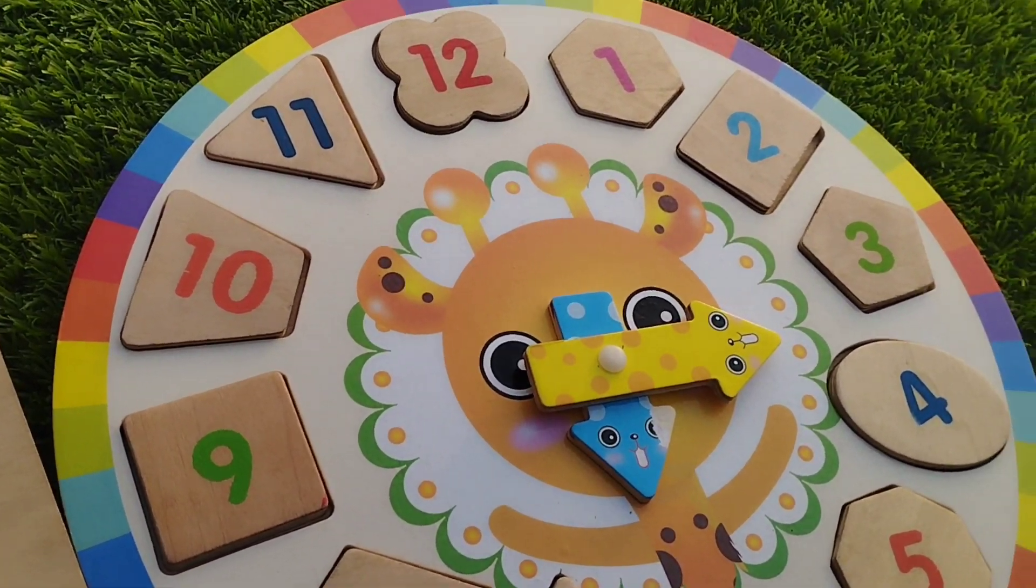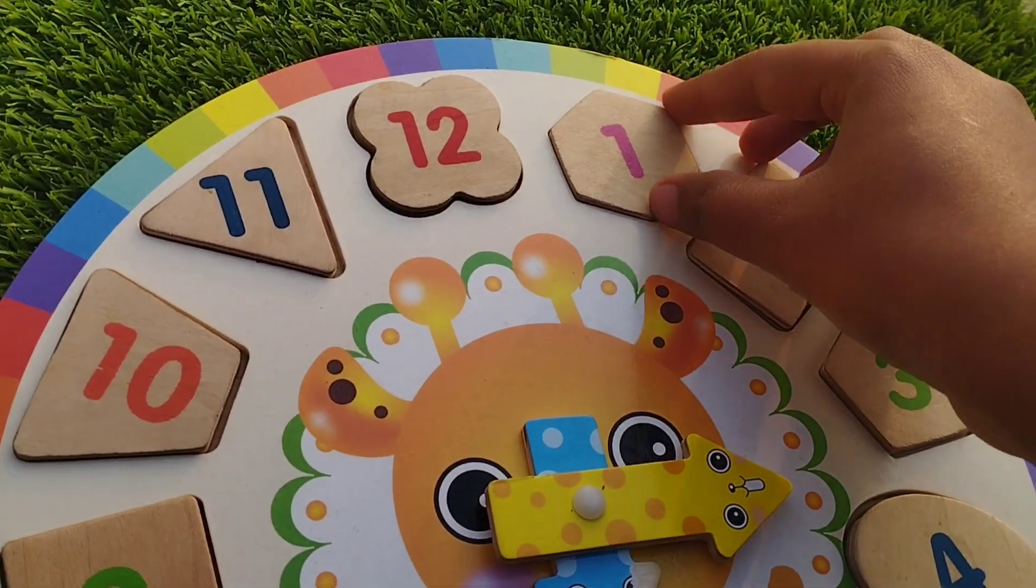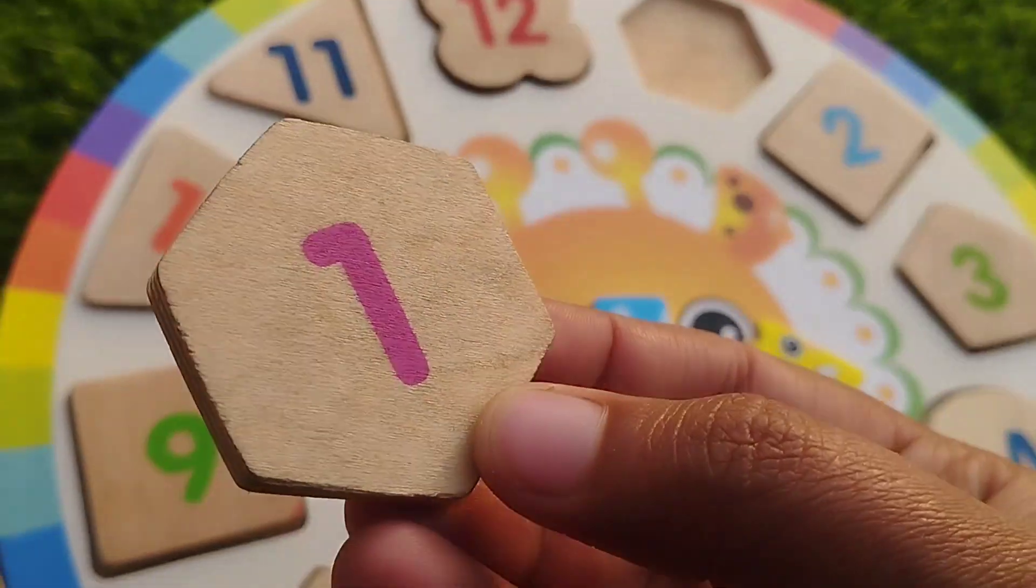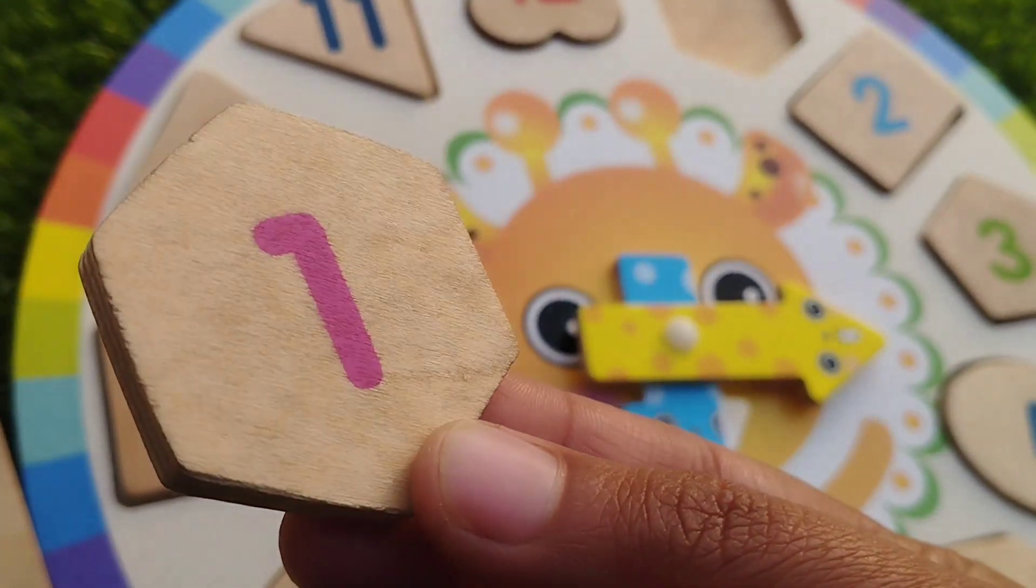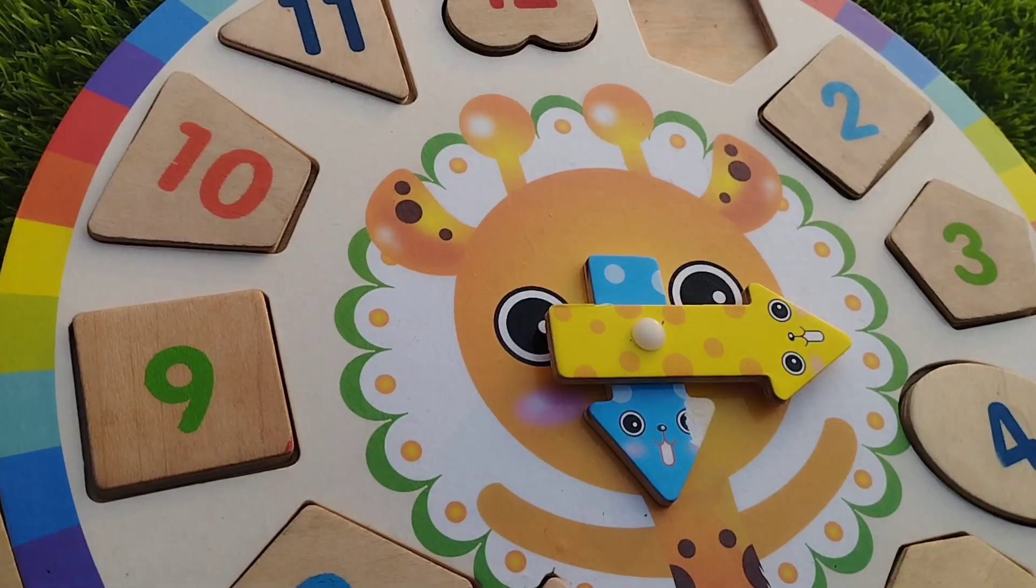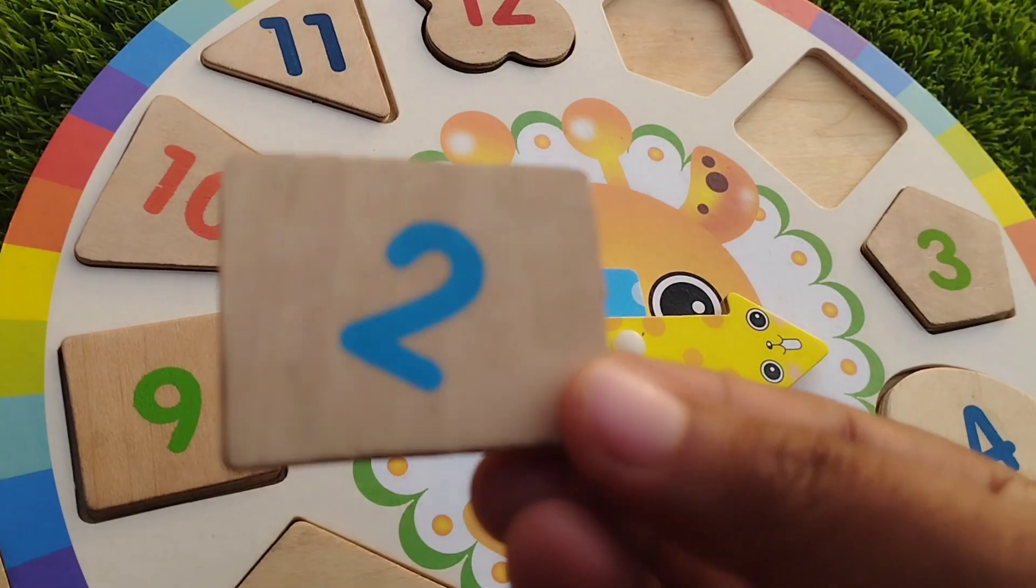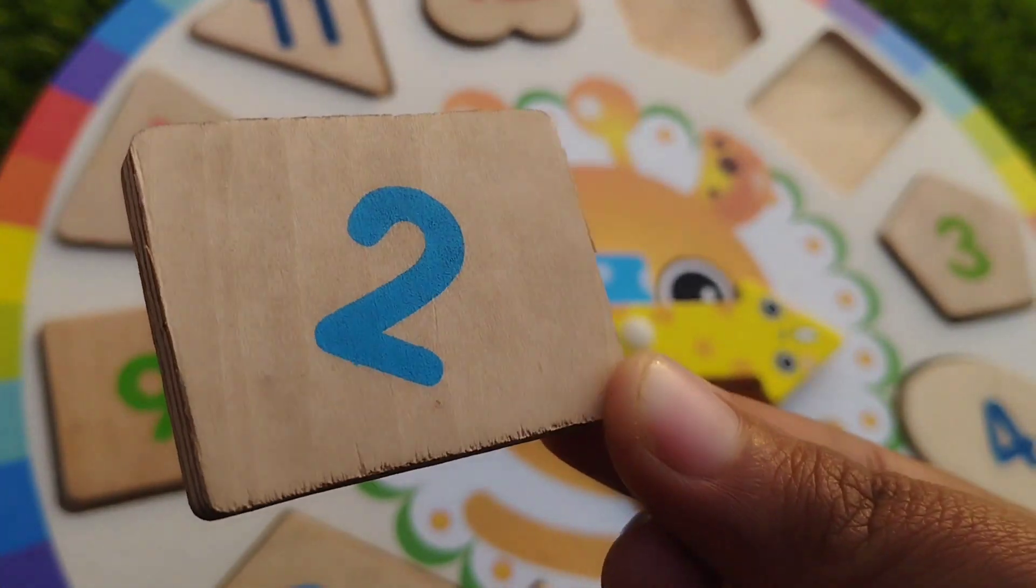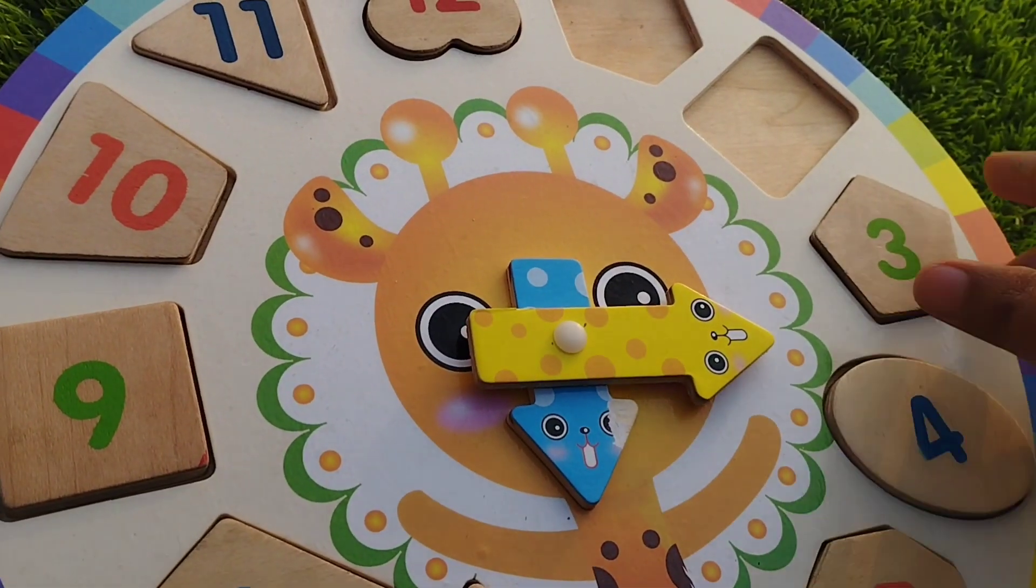Let's learn shapes names. The first shape is hexagon. This is hexagon. 10. The next one is rectangle. This is rectangle shape.